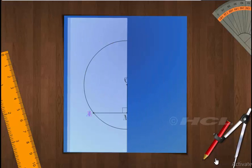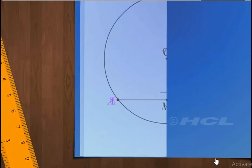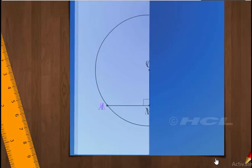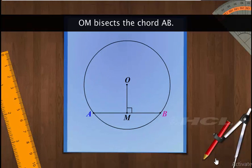Fold the circle vertically along OM. You can see that point B coincides with point A. This proves that M is the midpoint of AB, and we can say that the perpendicular OM bisects chord AB. We can do this experiment with any other chord of the circle and find that the perpendicular from the center of the circle bisects the given chord.